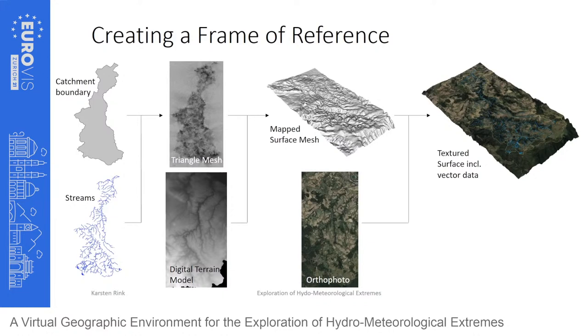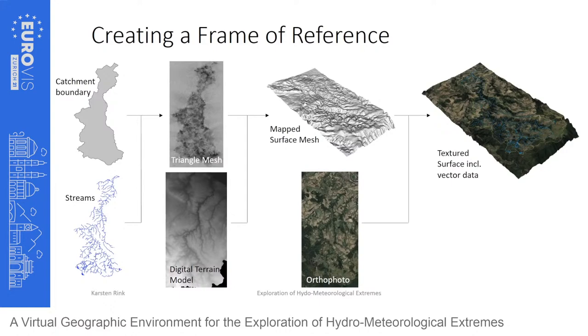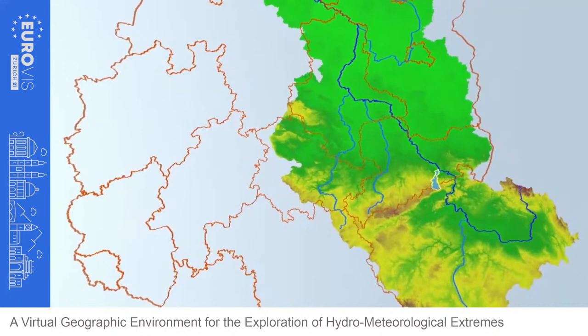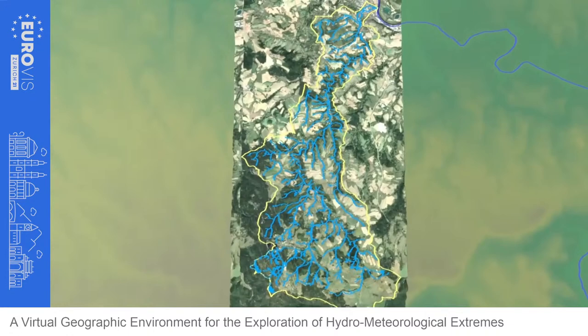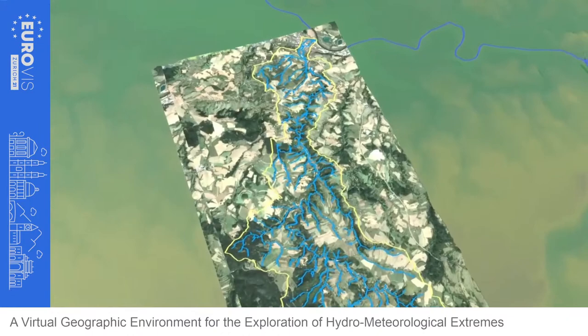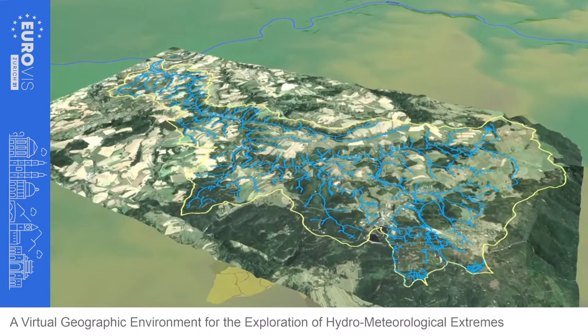Catchment boundary and streams were mapped onto the surface. Since most people won't know the precise location of this small catchment, we start the visualization with an overview of Germany, a look at the Elbe catchment, then zoom in first in a map-like overview and then change to an isometric perspective to make use of the 3D environment.